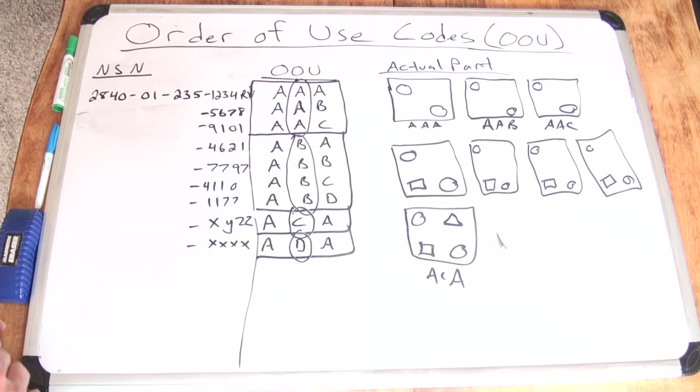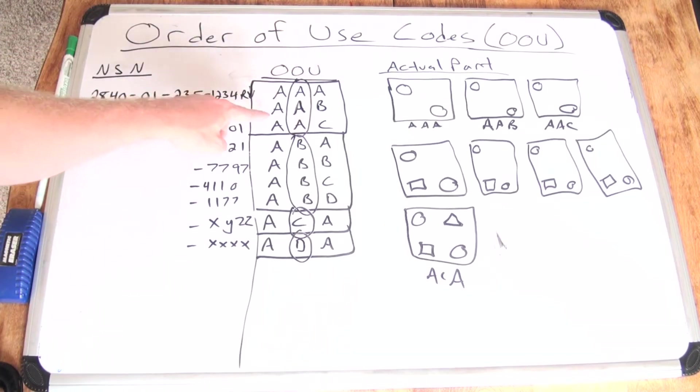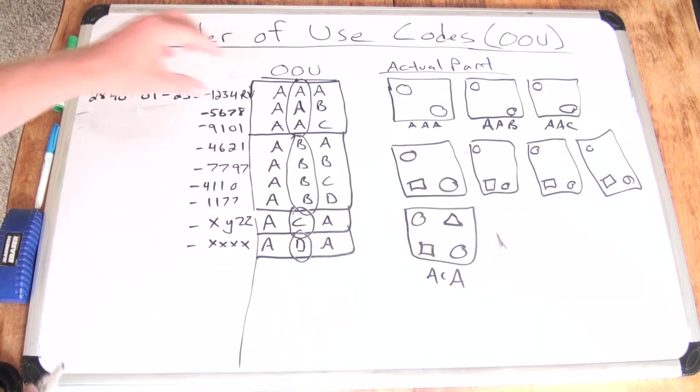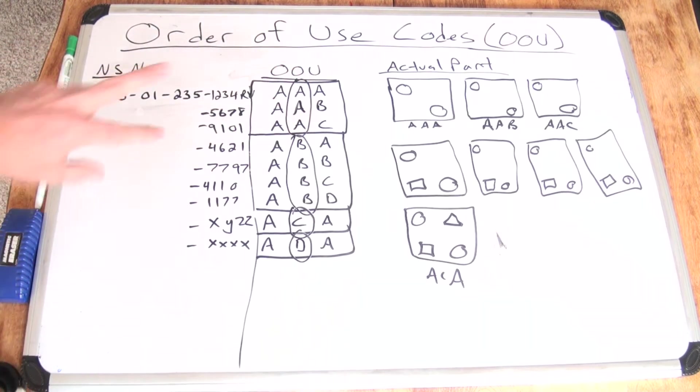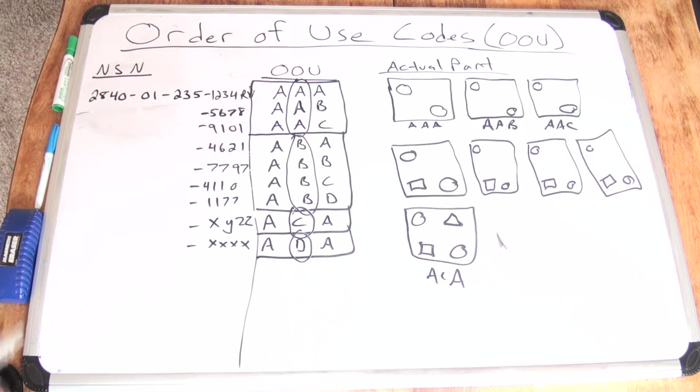Now between subgroups, you can only go one direction. You can only replace something with something higher than it or itself. So if I needed an AAA and DLA didn't have one and they didn't have an AAB or an AAC, but they did have say an ABB stock number, that 7797, DLA can issue that ABB and it'll fill the hole for that AAA, no problem. But now the reverse is not true. If I needed an ABB and DLA said, I don't have an ABB, but I have an AAC, it can't go the other way.